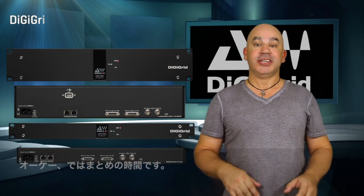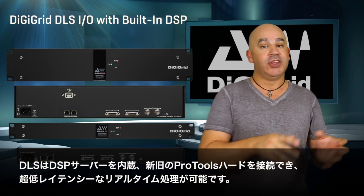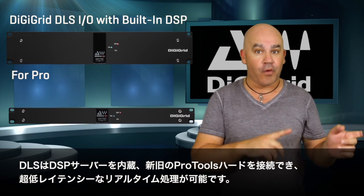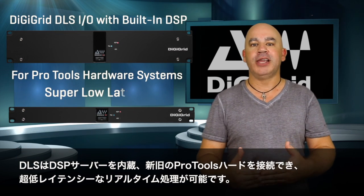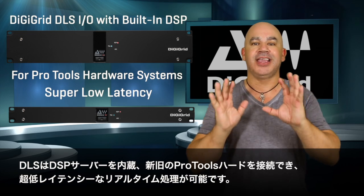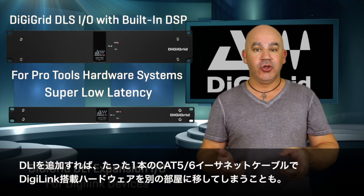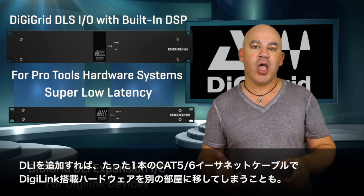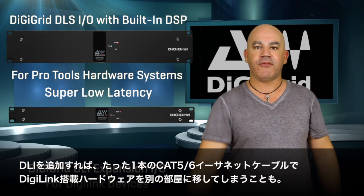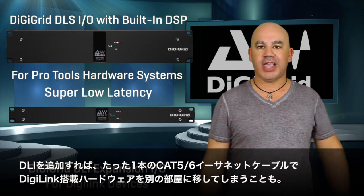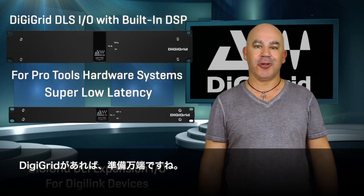The DigiGrid DLS is a powerful DSP unit that you can connect to your new or old Pro Tools system, giving you super low latency processing to deal with anything you can throw at it. If you add a DLI, you can move any DigiLink-enabled IO rack into another room with one Cat5e or Cat6 cable. With DigiGrid, you're good to go.